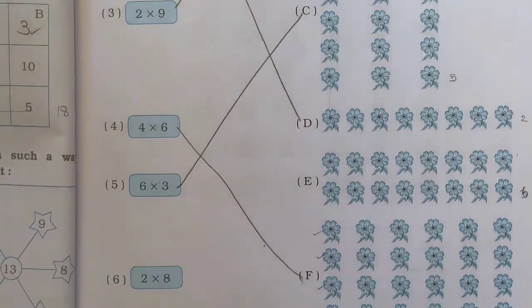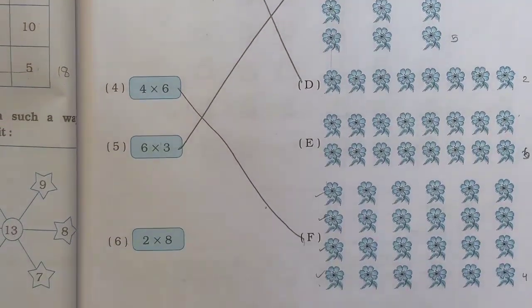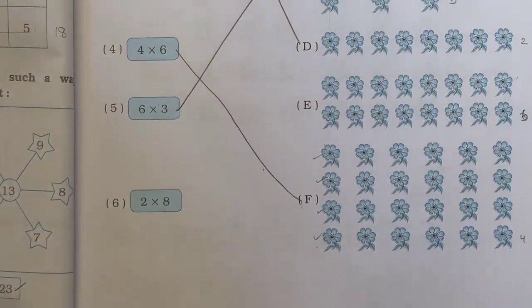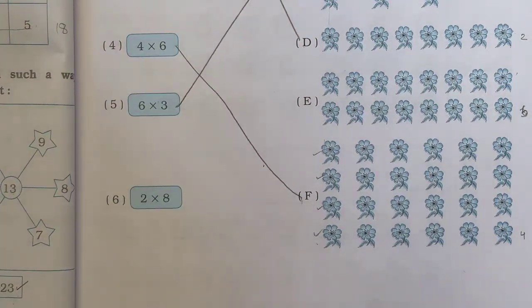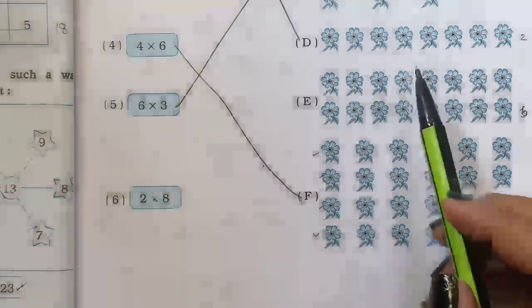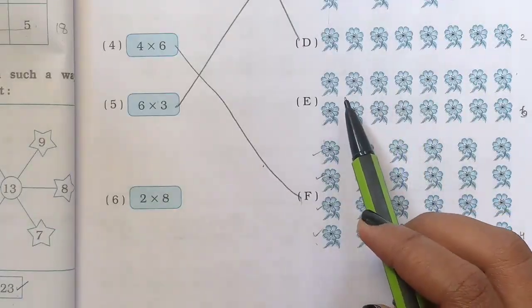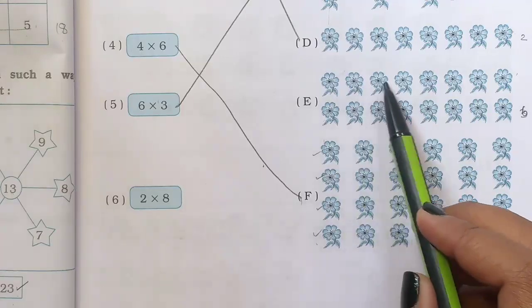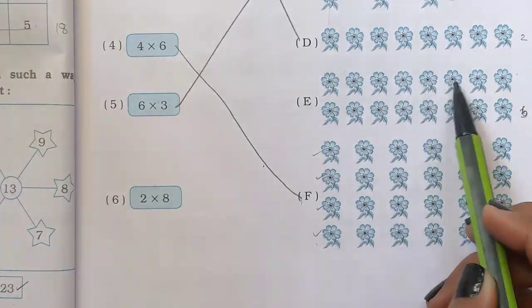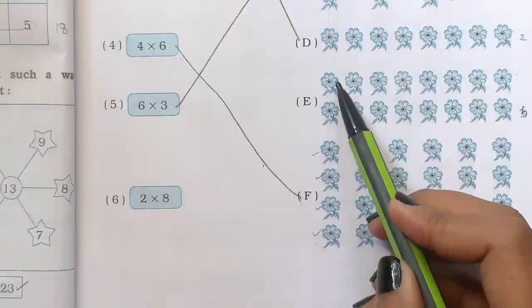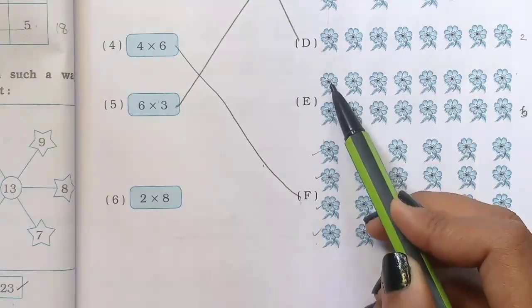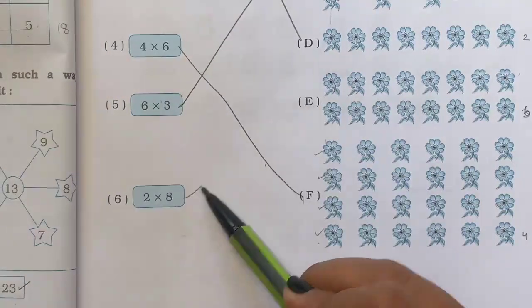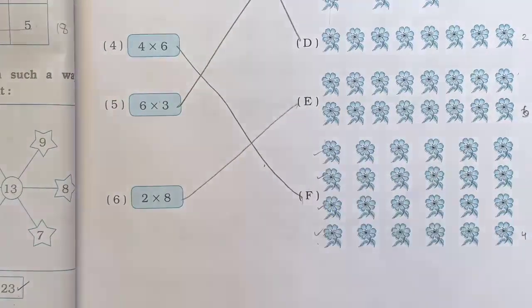Then number 6 is 2 times 8 — 2 multiplied by 8. We find the picture with 8 objects: counting 1, 2, 3, 4, 5, 6, 7, 8. So we match it with E.